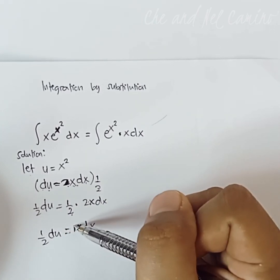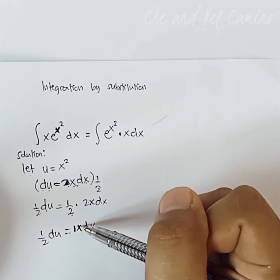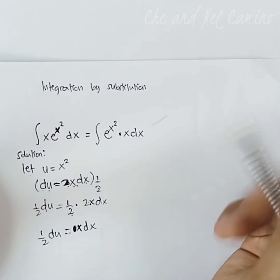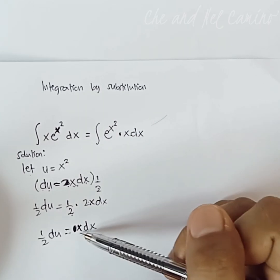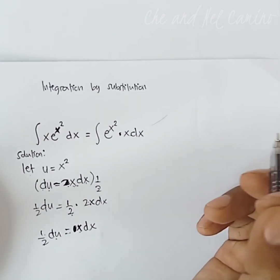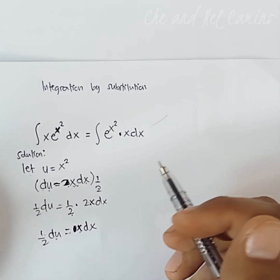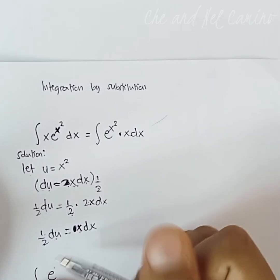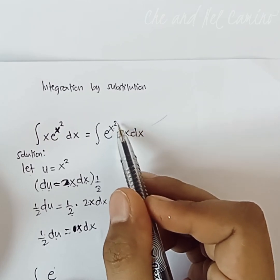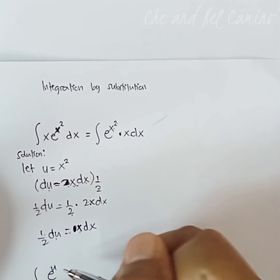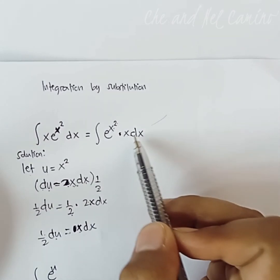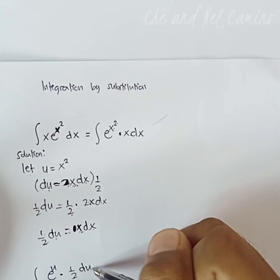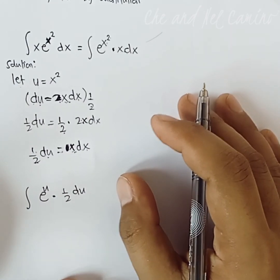Since the coefficient is just 1, there is no need to write it explicitly. We have x dx equal to one half du. We are now good enough to proceed to integration. The integral of e to the power of x squared times x dx becomes the integral of e to the power of u times one half du.